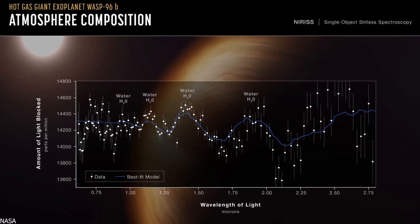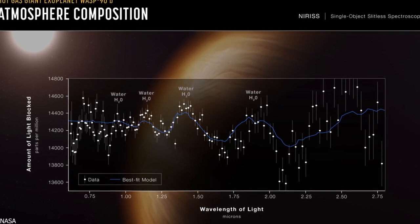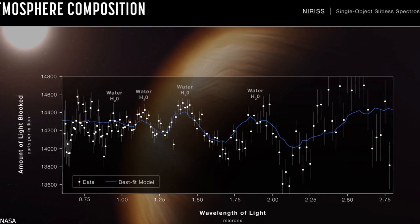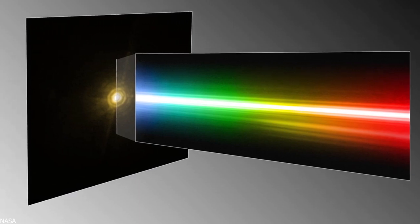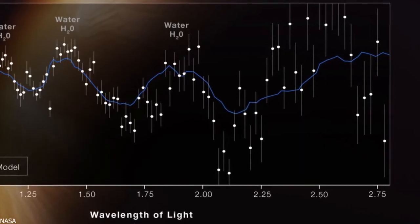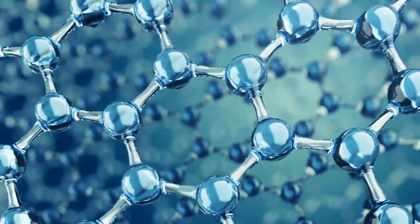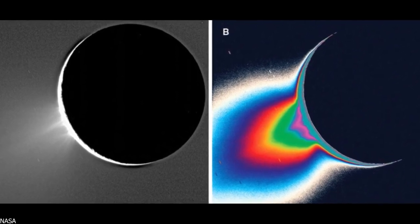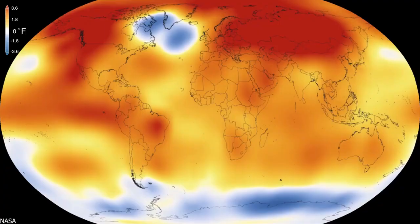The NIRISS captured spectrum of WASP-96b is not only the most detailed near-infrared transmission spectrum of an exoplanet atmosphere to date, but it also covers a vast range of wavelengths, including visible red light and a portion of the spectrum not previously accessible from other telescopes, wavelengths longer than 1.6 microns. This spectrum region is susceptible to water and other key molecules such as oxygen, methane, and carbon dioxide, which are not immediately visible in the WASP-96b spectrum, but should be detectable in other exoplanets planned for Webb's observations.